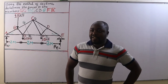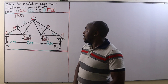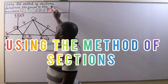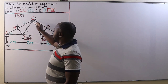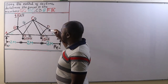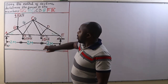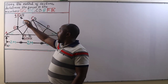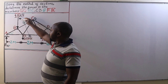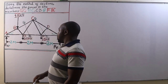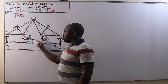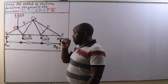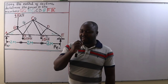Welcome back to today's lesson. We are going to use the method of sections to determine the forces in members GC, BC, CD, and FE on the given truss. It is loaded by an external load of 1.5 kN at joint B, 2.5 kN at joint G, and 1.5 kN at joint F.